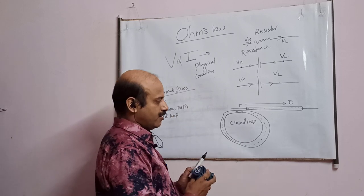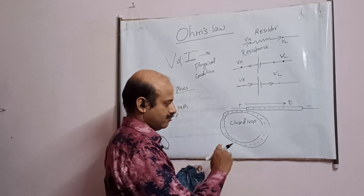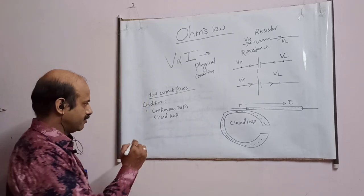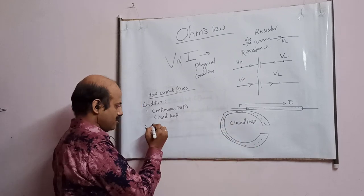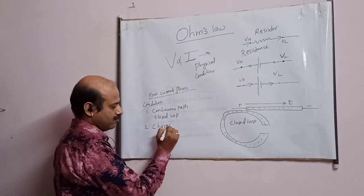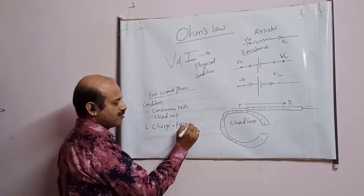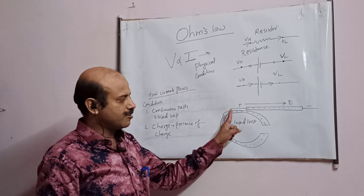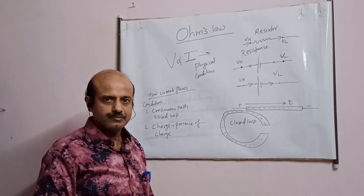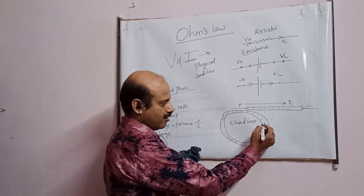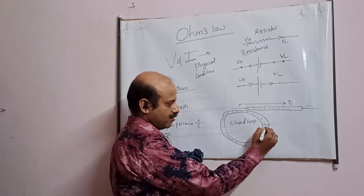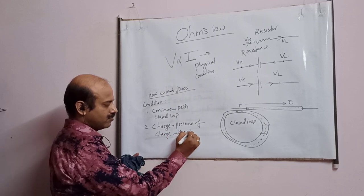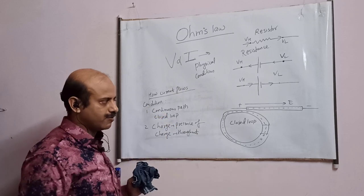Suppose I break it from here — now current cannot flow. That is the first condition. Second condition: what is flowing? Charge. There should be a continuous presence of charge everywhere. There should be a continuous presence of charge throughout — that is the second condition for the current to flow.